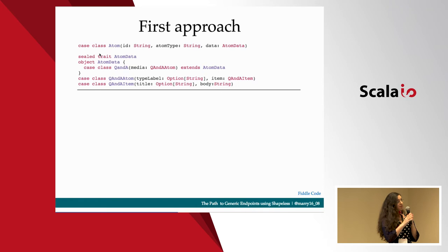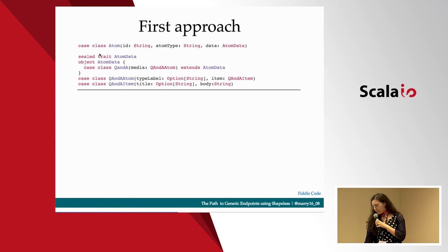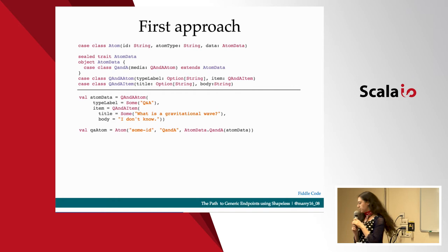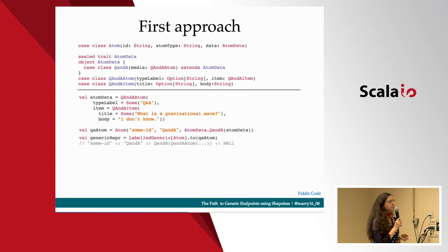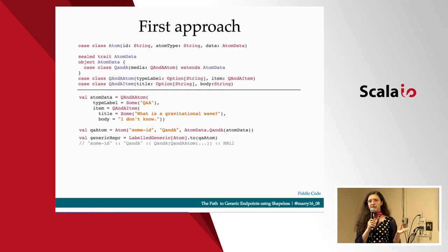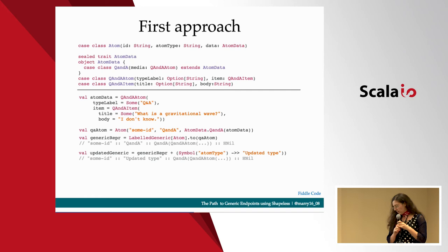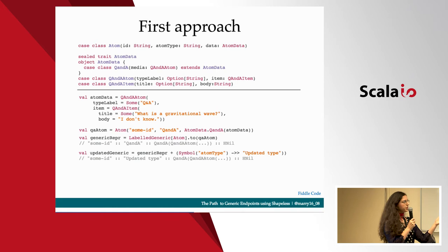This was our first try at using Shapeless. These are just some case classes meant to copy the ones we use in production — they might look a bit over-engineered, but that's because we're using Thrift in production. This is just an atom. Let's say we want to update the field called atom type. We first use LabelGeneric from Shapeless to convert from our concrete type atom to a generic HList. The difference from plain Generic is that LabelGeneric gives you more information about the fields — like the name of the field — which you can use later. We can then use this nice syntax to update the atom type field, and it works fine. We now get an updated value for the type.